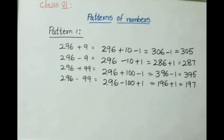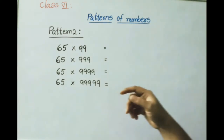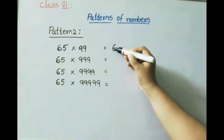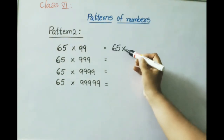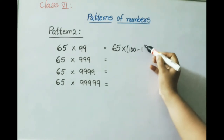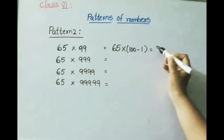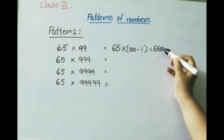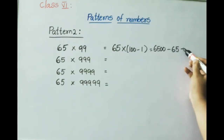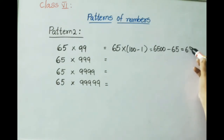Now let us see a few more patterns. Pattern 2: 65 into 99. We write 99 as 100 minus 1. So 65 multiplied by 100 equals 6500, minus 65 multiplied by 1 equals 65. Subtracting both, we get the answer 6435.